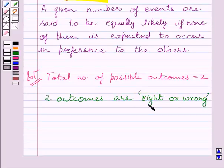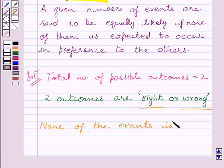Now, we know none of the events right or wrong is more likely to occur. So, we can write, none of the events is more likely to occur. And from key idea, we know a given number of events are said to be equally likely if none of them is expected to occur in preference to the others.